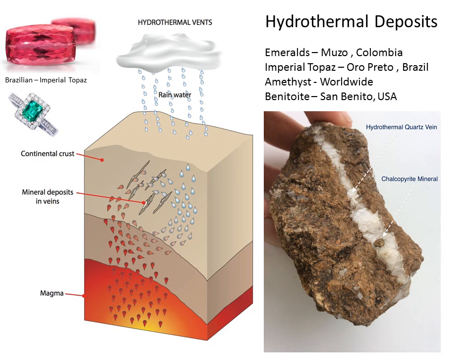Hydrothermal deposits are very important, especially for imperial topaz in Brazil and the famous emerald deposits in Colombia. Mineral-rich fluids or water coming off magmas circulate and, when there are crevices, deposit minerals on their inner surfaces, creating hydrothermal veins. Rainwater can also percolate through in a convection-type current. You can see an example of a quartz vein running through rock with pyrite growing there — this is very important for emeralds and imperial topaz.